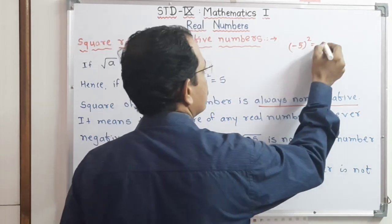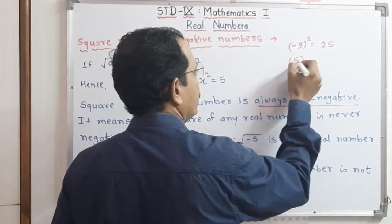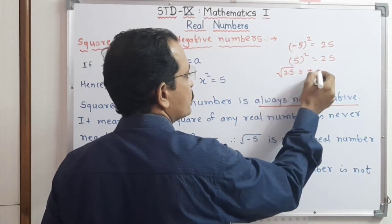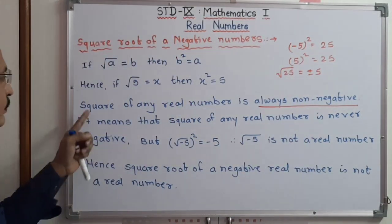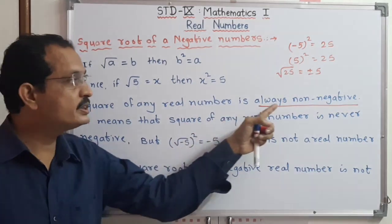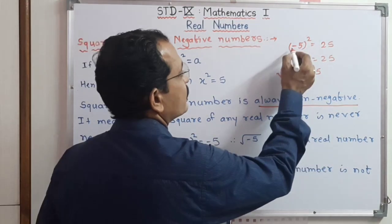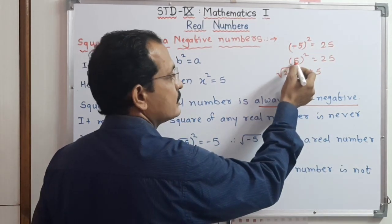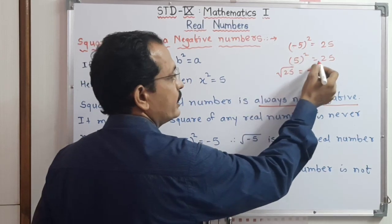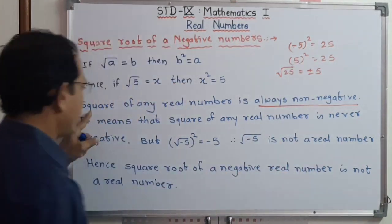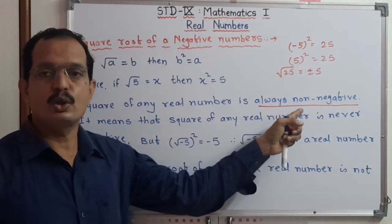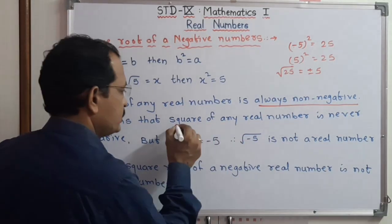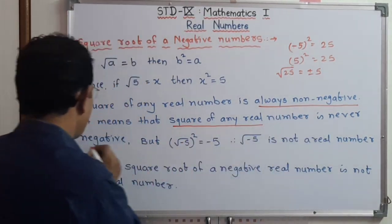For example, the square of minus 5 is 25, and the square of 5 is also 25. So if we have to write the square root of 25, it is plus or minus 5. Therefore, the square of any real number is always non-negative — it is never negative. The square of minus 5 gives positive 25, and the square of positive 5 also gives positive 25.